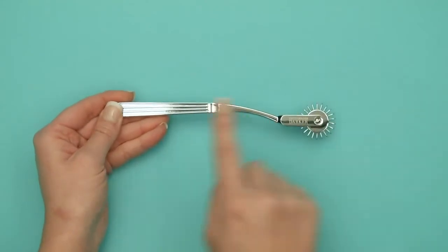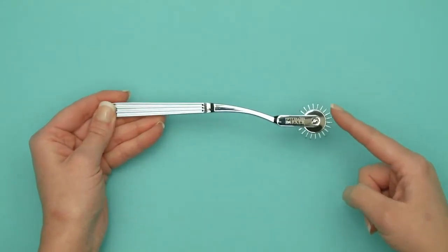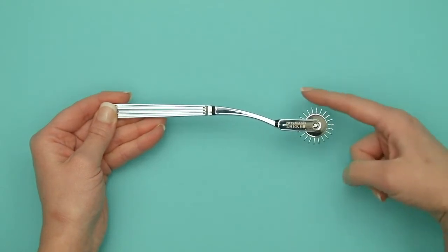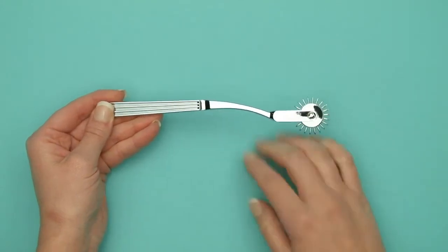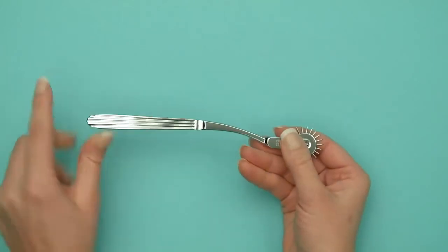22 spiked pins on a rotating wheel delicately prickle the skin to awaken nerve endings and enhance sensitivity. Its ergonomically shaped handle ensures seamless control over direction and pressure.